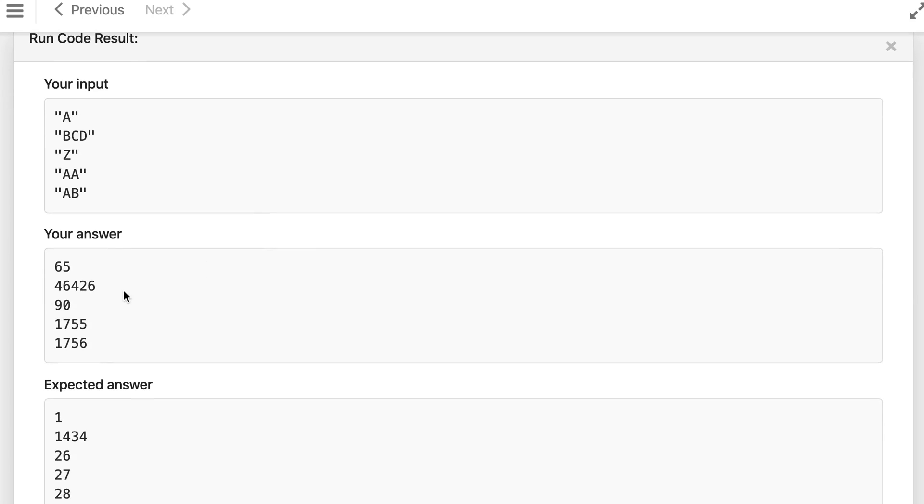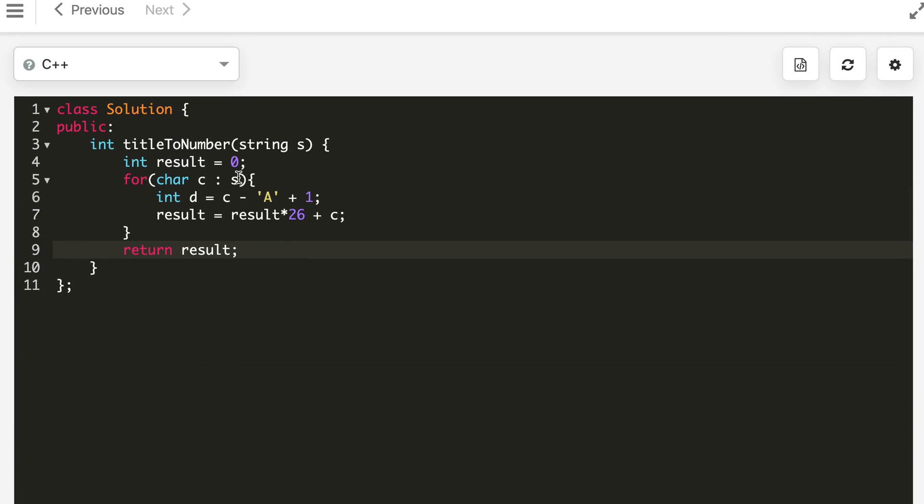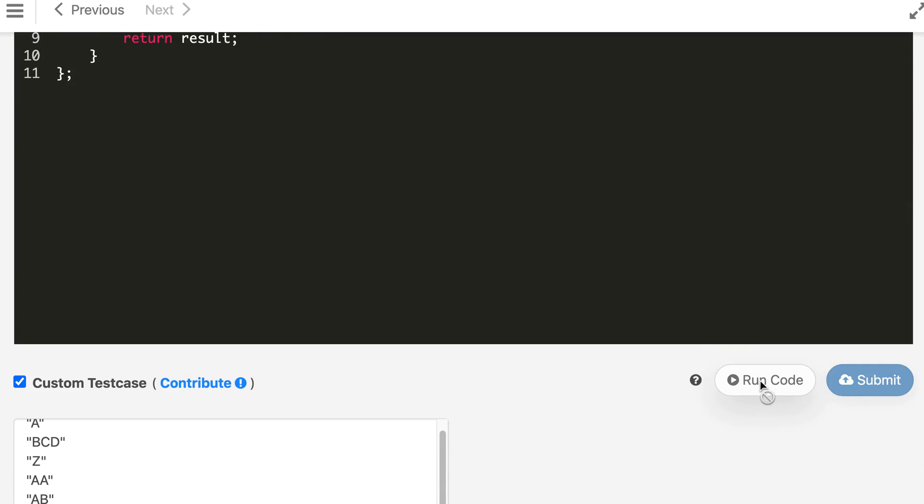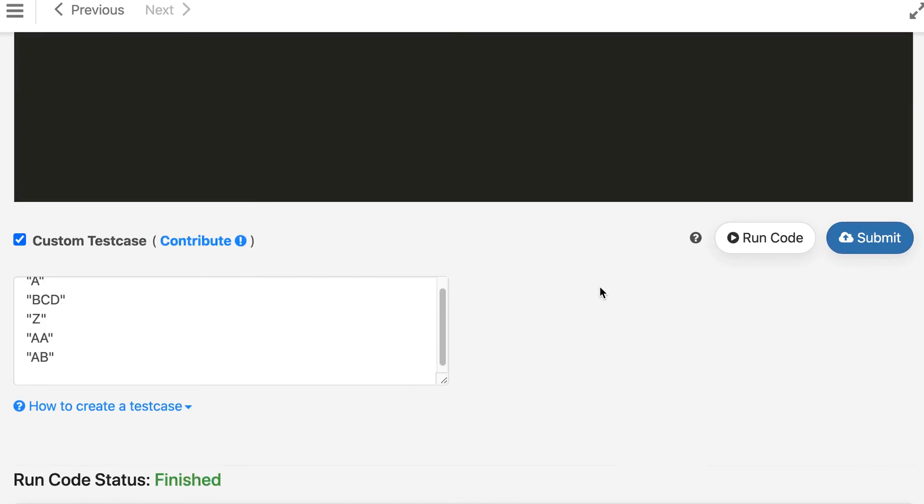So our answer here is wrong, let's see why. Result is 0, d is equal to c minus A plus 1. Sorry, it's c - that's why we calculated d here. And now it matches, so let's submit.